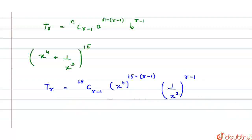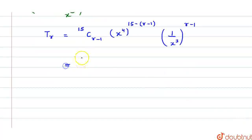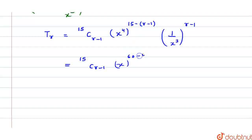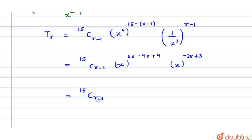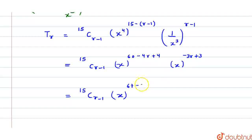Let us further solve this term. This gives 15C(r−1) · x^(4×(16−r)) · x^(−3(r−1)), which is 15C(r−1) · x^(64−4r) · x^(−3r+3). Now let us combine the powers. Since the base is the same, powers add up: 64 + 3 = 67, and −4r − 3r = −7r. So we get 15C(r−1) · x^(67−7r).